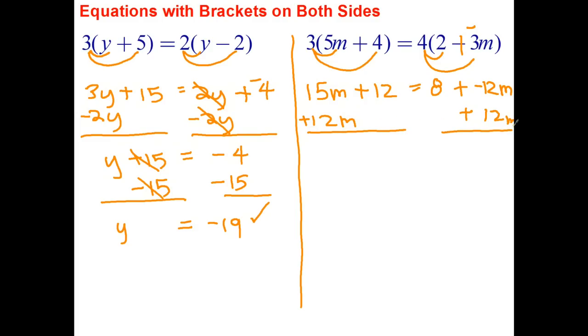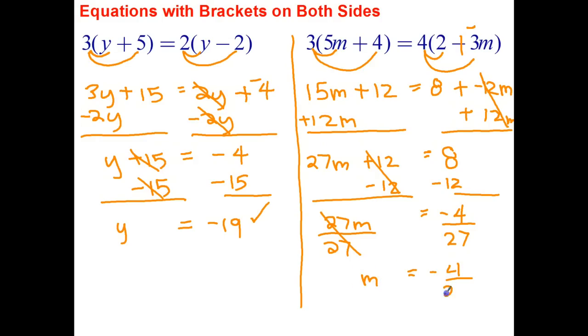Minus 12m plus 12m goes to 0, leaving just 8 on the left-hand side. 15m plus 12m is 27m plus 12. And now we're down to solving a two-step equation, which we've done before. We can subtract 12 from both sides. Plus 12 minus 12 cancels out, leaving just 27m on the left. 8 subtract 12 is negative 4. And the last step is divide both sides by 27. They cross out, and m equals negative 4 on 27.